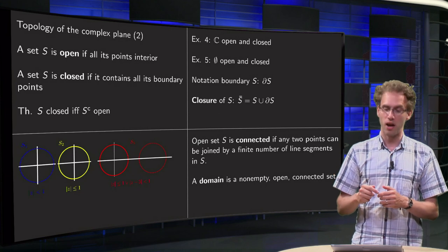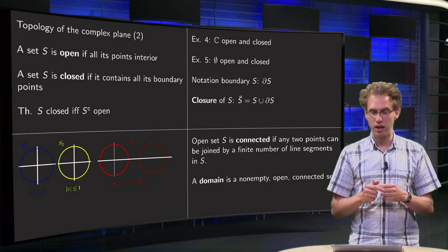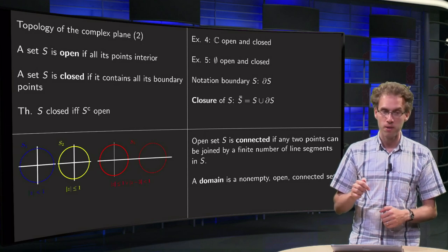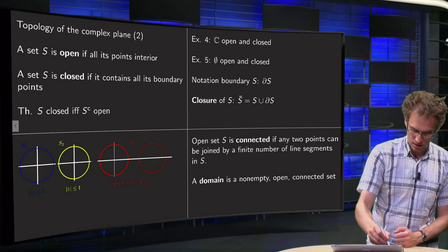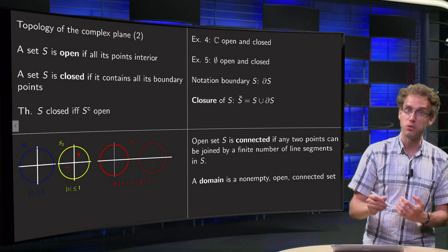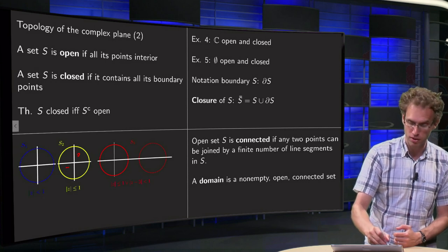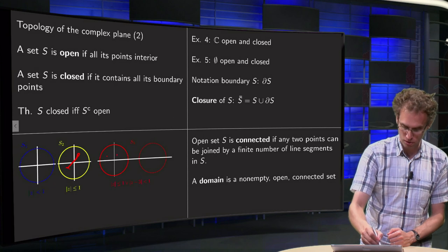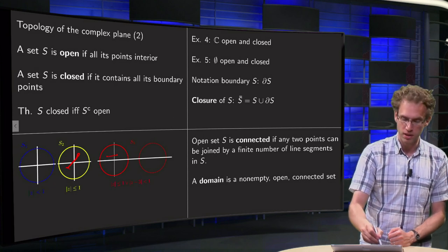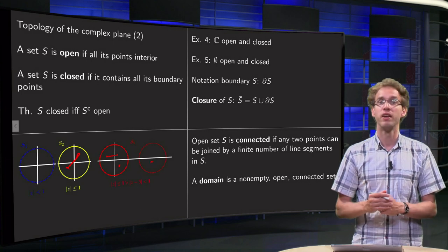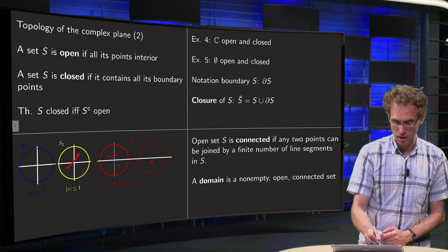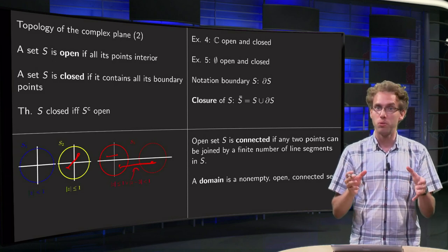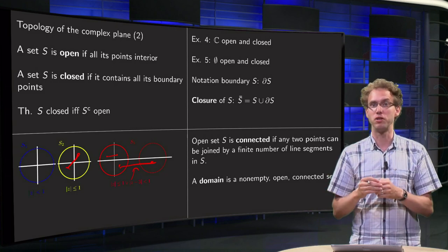An open set is called connected if you can join any two points inside the set by a finite number of line segments inside the set. For example, the set S2 here is connected, because if you take two points here you can join them together by a finite number of line segments — by one line segment in fact. The set S3 is not connected: some points can be connected by a line segment, but if I take a point over here and a point over here, I cannot connect them by a line segment in S3 — that line segment is not in S3, this part is not in the set.